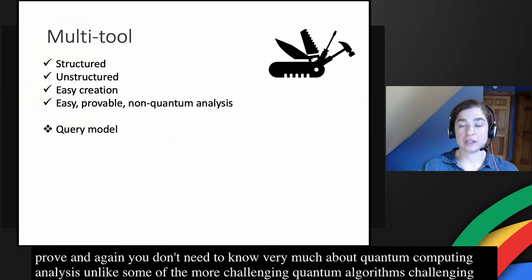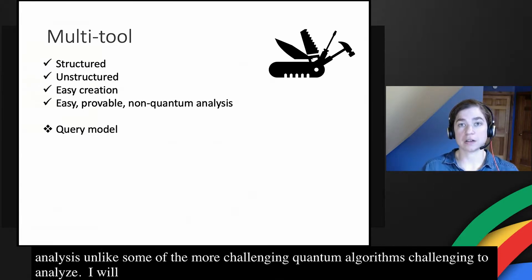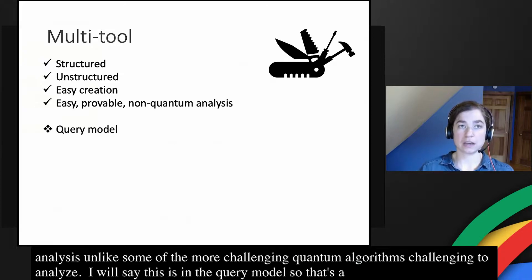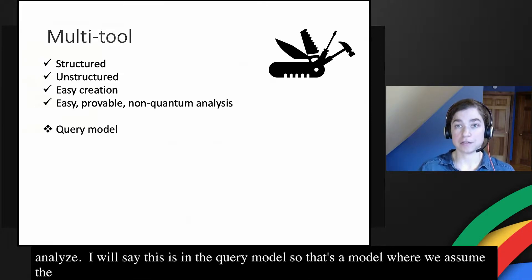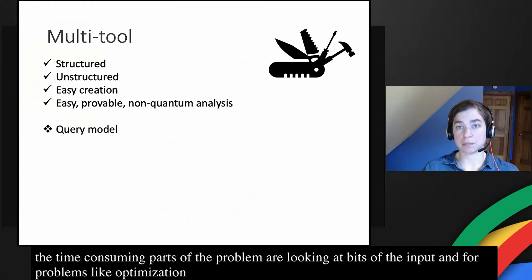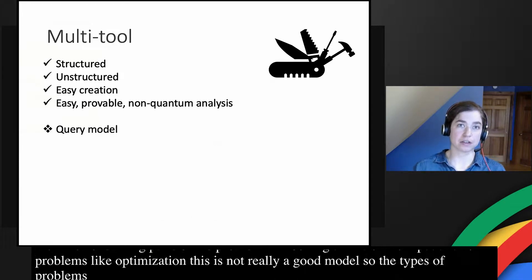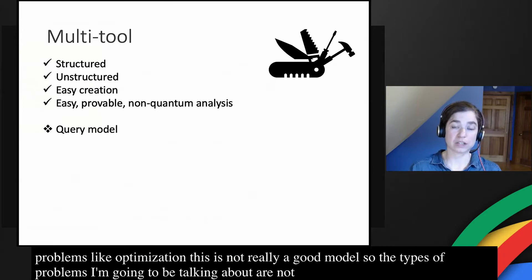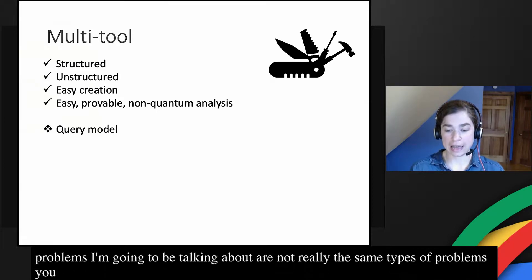I will say that this tool is in the query model, so that's a model where we assume that the time-consuming parts of the problem are looking at bits of the input, and for problems like optimization this is not really a good model. So the types of problems that I'm going to be talking about today are not really those same types of problems that you might want to solve with the QAOA algorithm.